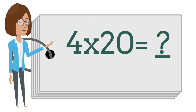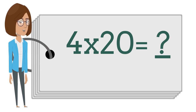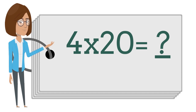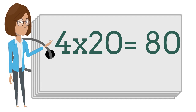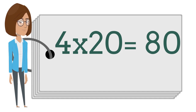4 times 20 is? Can you tell me what 4 times 20 is? Say your answer out loud. 4 times 20 is 80. 4 times 20 is 80.